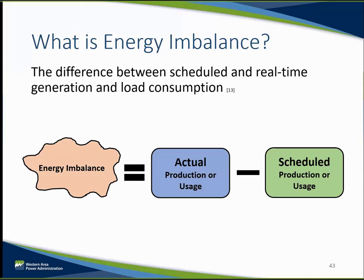Energy imbalance, or EI, is the difference between what actually happens for each generator and load location and what was prearranged through schedules. Energy imbalance occurs when generators produce amounts of energy different than what they have scheduled, or loads consume amounts different than scheduled. When this occurs in an energy imbalance market, the market operator directs resources that have opted to participate through security-constrained economic dispatch, or SCED, so that the most economical generator is backed down or ramped up to account for the energy imbalance.